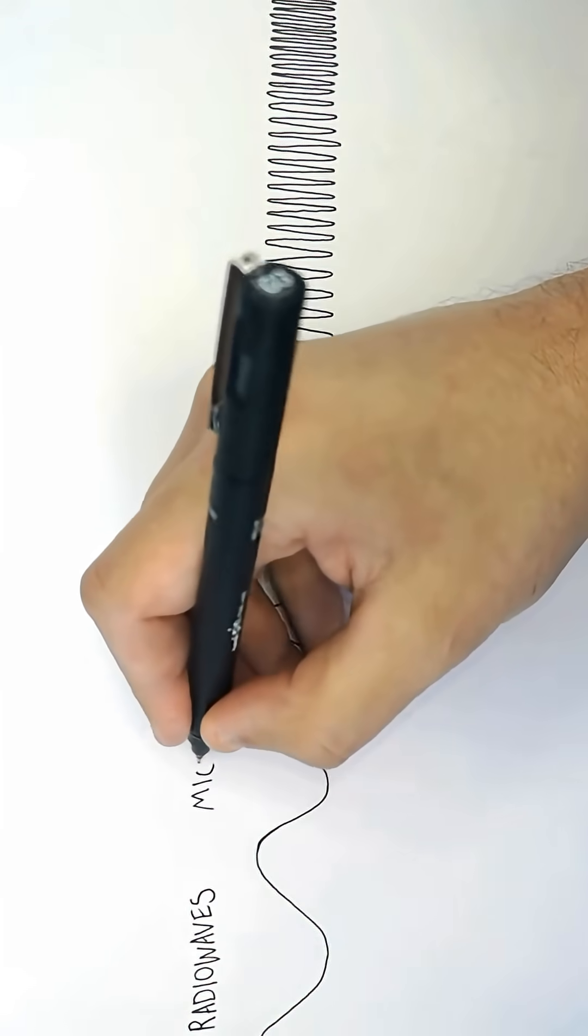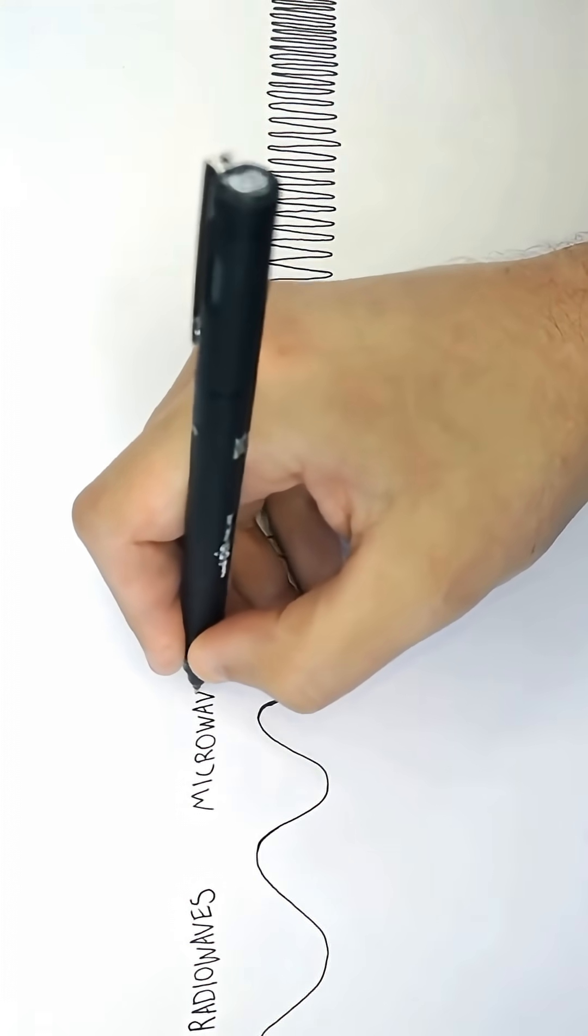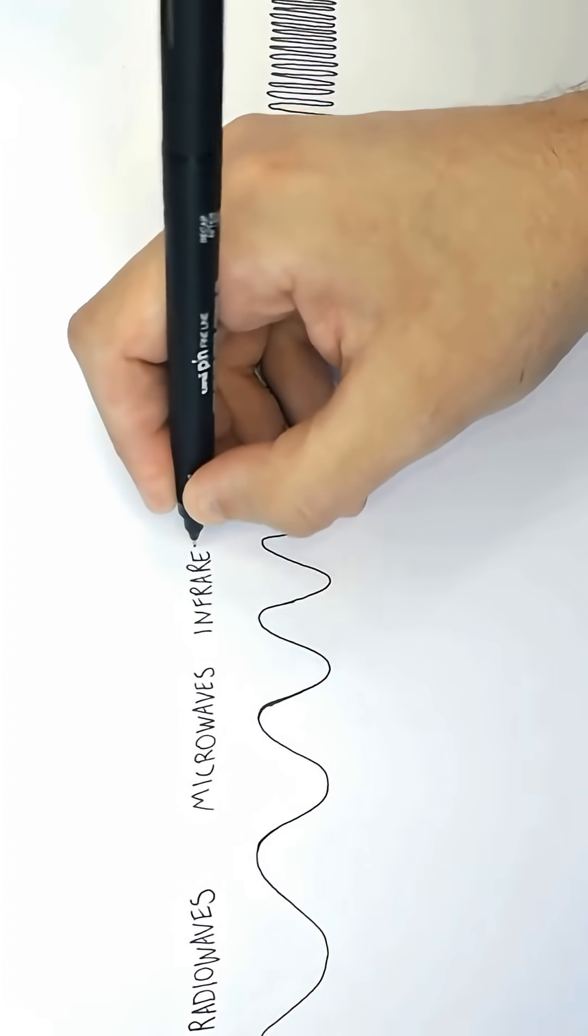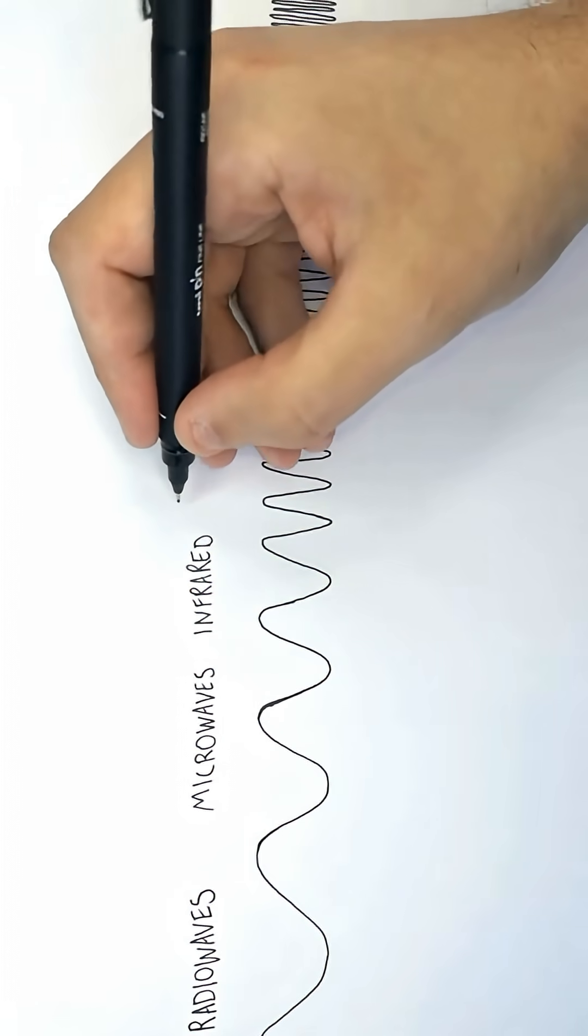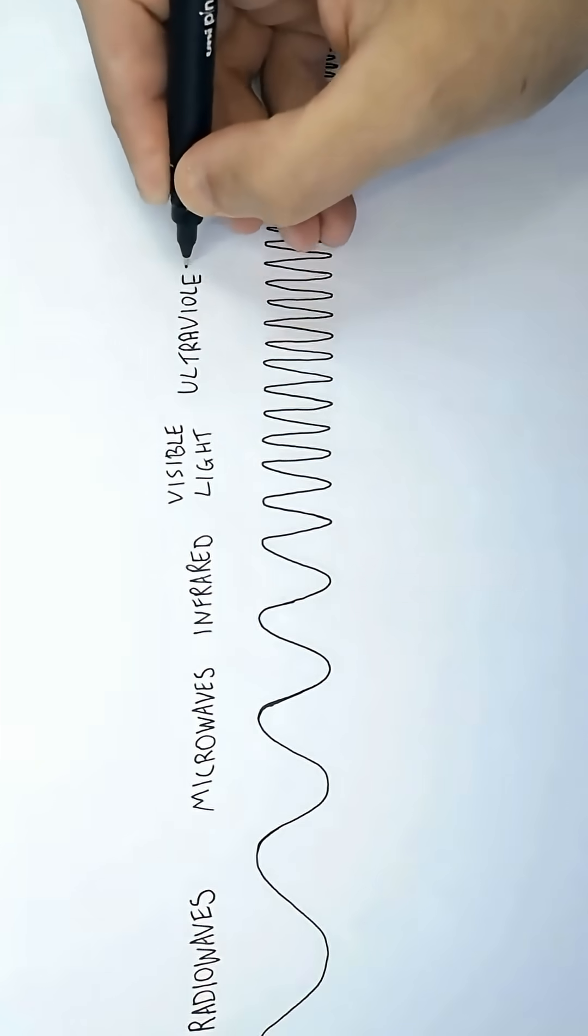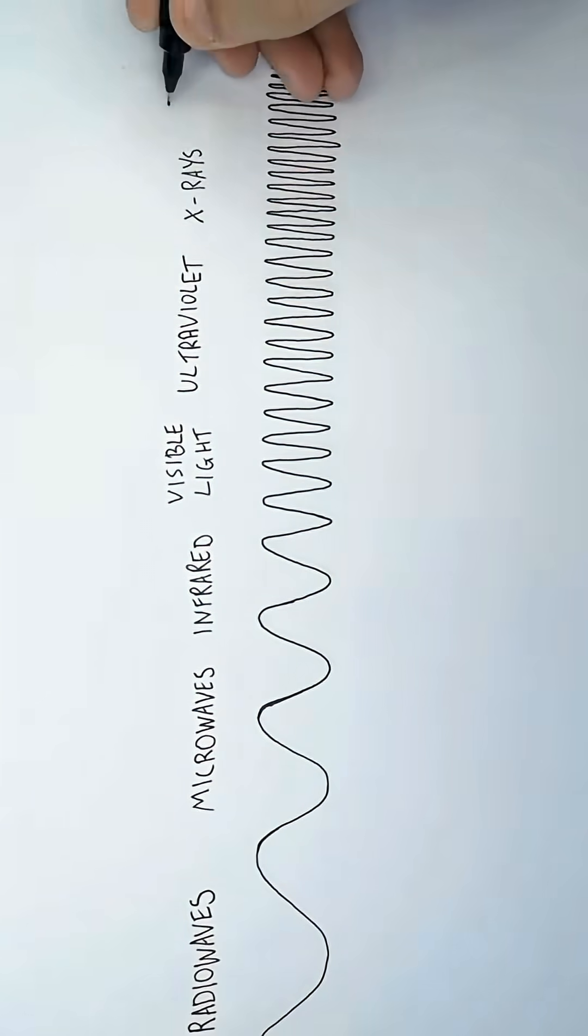And as you decrease the wavelength, you're going to find microwaves. And when you decrease the wavelength even further, you're going to find the infrared waves. And as you shorten the wavelengths further, you're going to find the visible light, the ultraviolet radiation, then the x-rays, and then the gamma radiation.